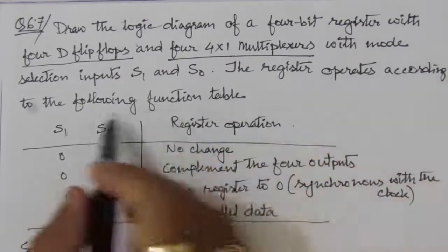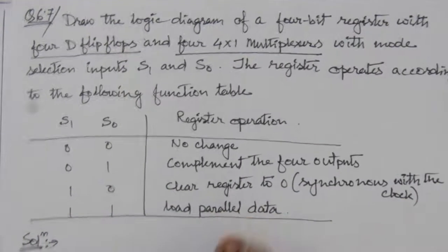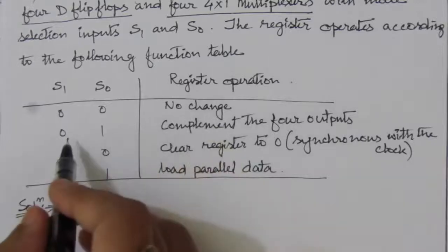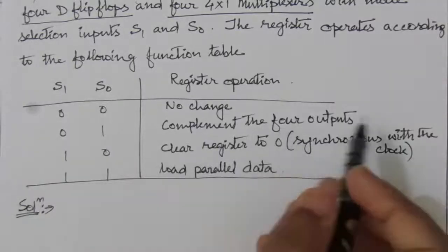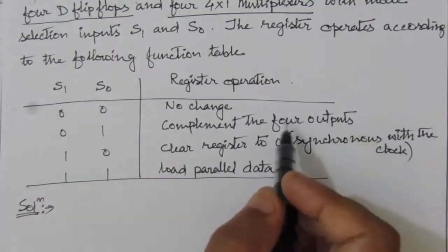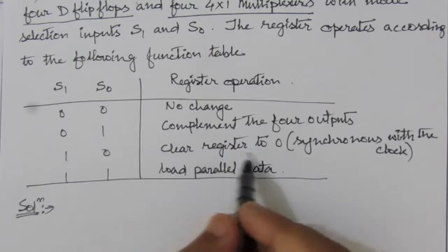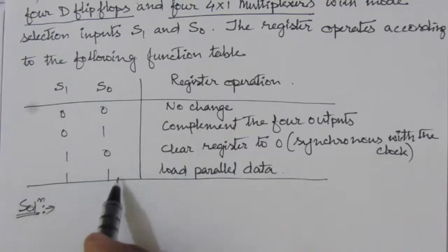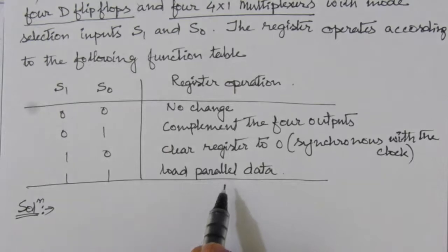The register operates according to the following function table. When both selection lines are 0 and 0, there will be no change. When S1 is 0 and S0 is 1, we have to complement the 4 outputs — whatever the content of the register previously, we complement those outputs. When S1 is 1 and S0 is 0, we clear the register to 0, meaning all outputs will be 0. When S1 is 1 and S0 is 1, we load parallel data — whatever data is available at the 4 inputs of this 4-bit register will be transferred through the register.